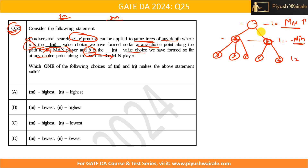Now it is the max player's turn. The max player tries to maximize its chances. Out of the values two and five passed up by the min player, the maximum is five. So the root node gets the value five — that is the result for the max player.